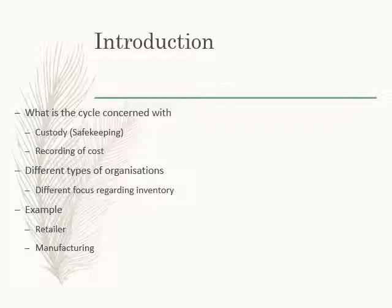It's a fairly simple model for a retailer, whereas in the manufacturing space you would be concerned with acquiring raw materials. There would be a process involved which includes overhead costs, labor costs, and machine hours to turn that raw material into a finished good, which can then be sold to a customer at a profit margin. So different types of organizations have different focuses when it comes to how they treat inventory.